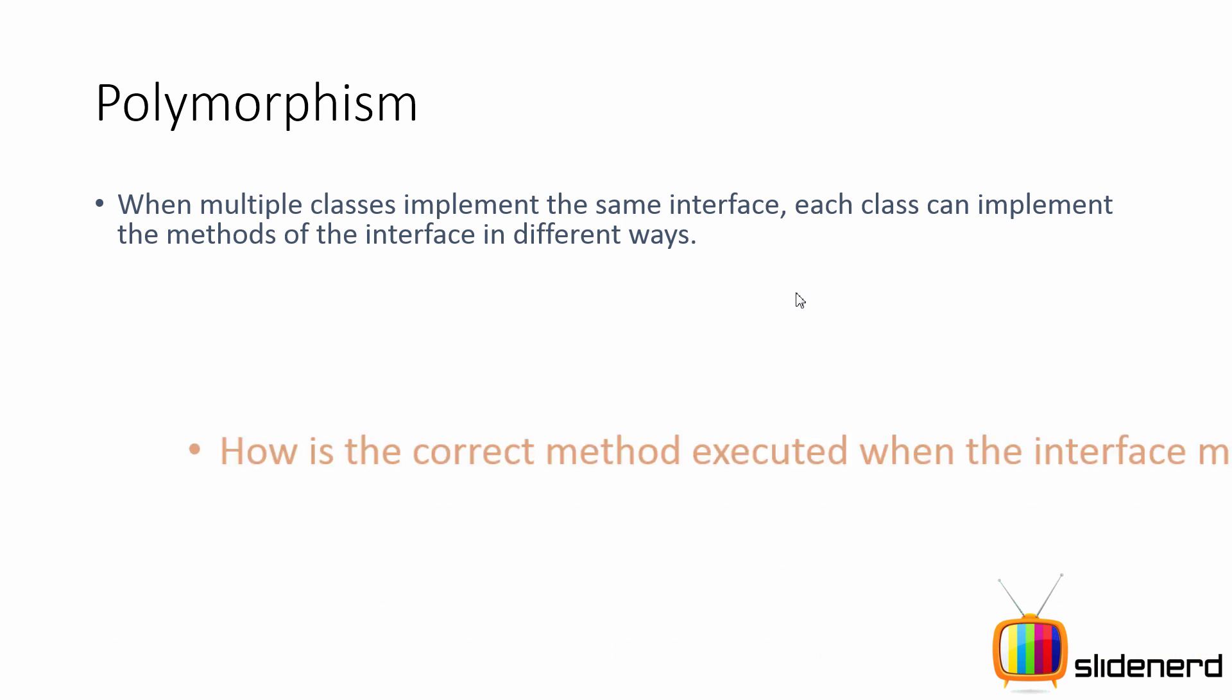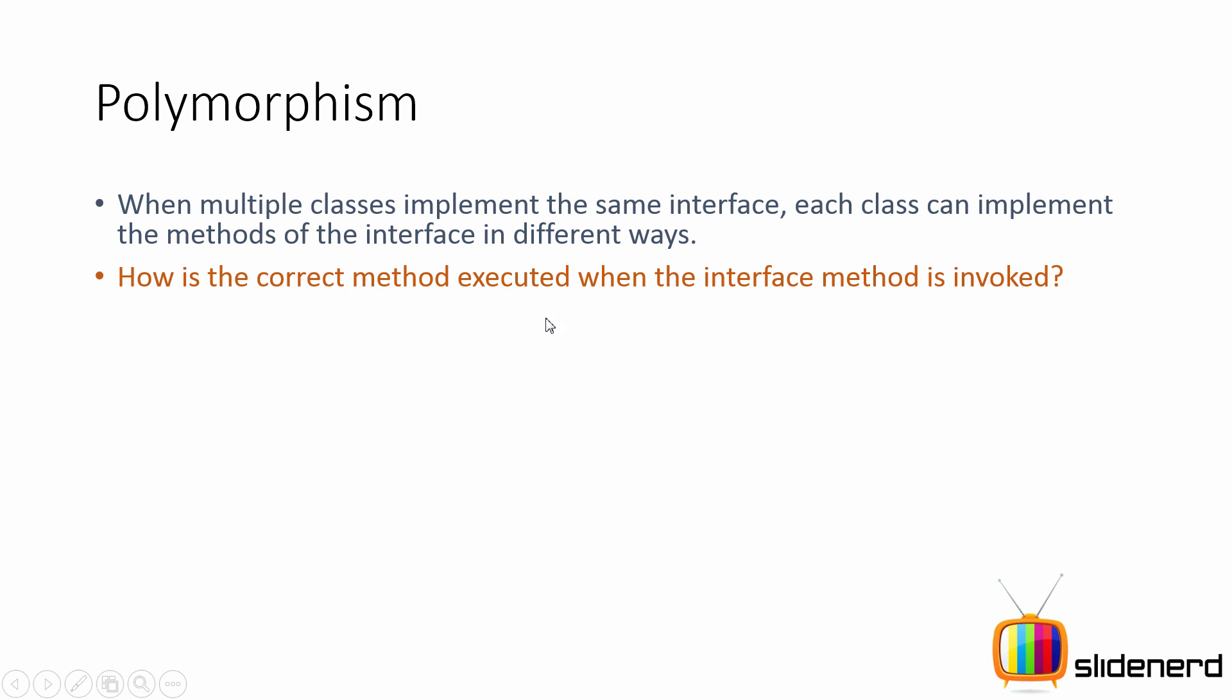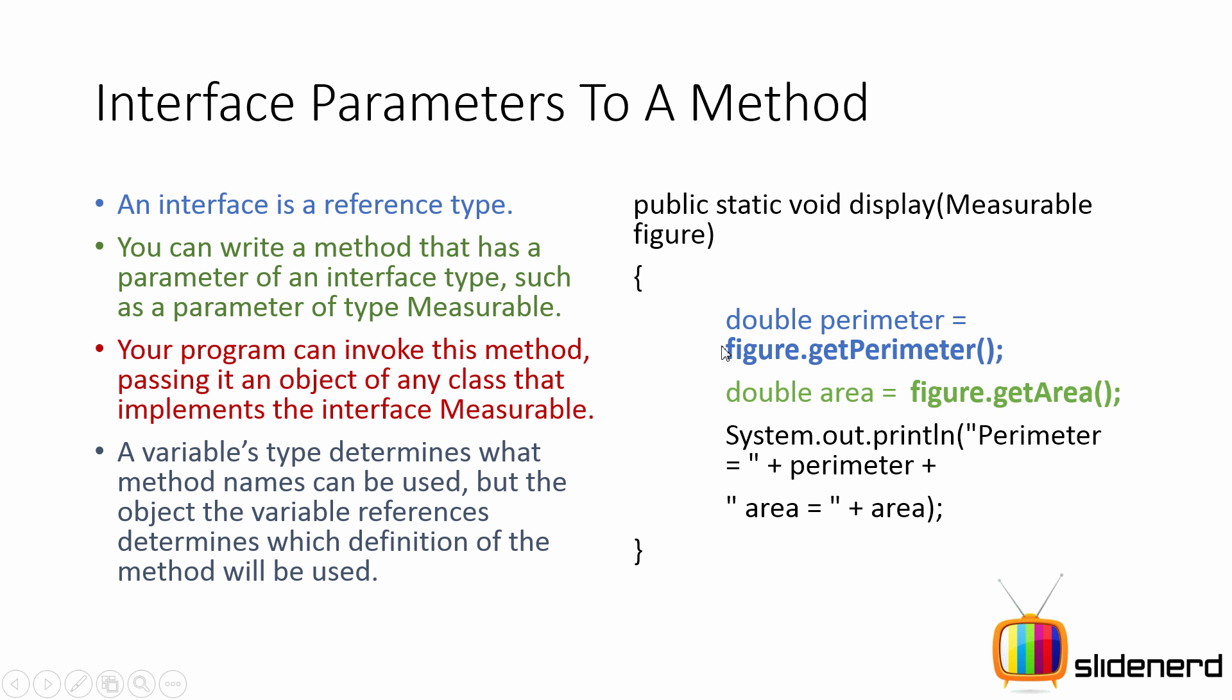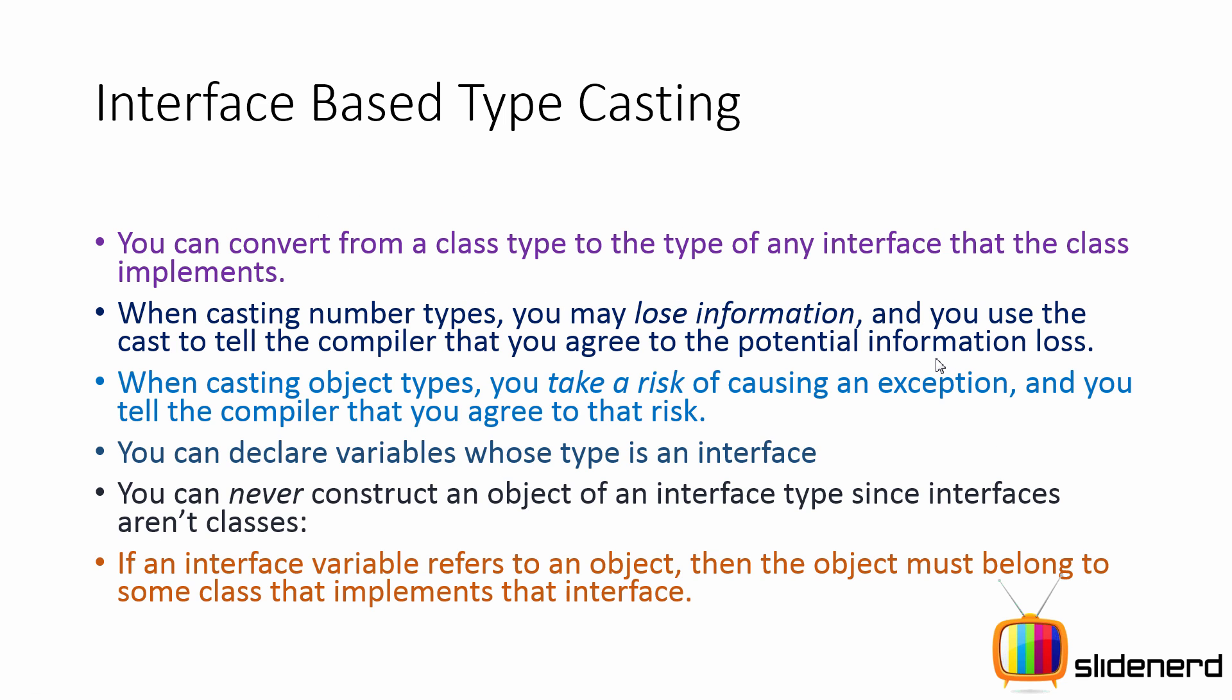So how is the correct method executed when the interface method is invoked? Like here, if you just remember in the slide, we had our perimeter equals to figure.getPerimeter. Exactly which getPerimeter is going to be called? Is it going to be from the rectangle, is it going to be from the circle which we discussed?